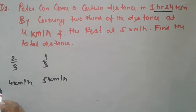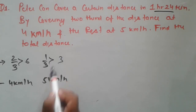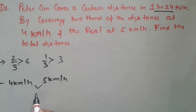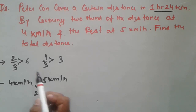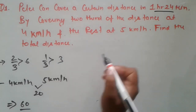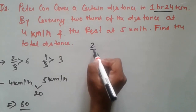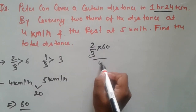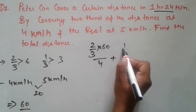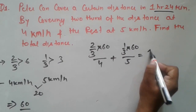We are given the speeds and the ratio of distances. We will take the LCM. LCM of 2 and 3 is 6; LCM of 1 and 3 is 3; LCM of 4 and 5 is 20. So the LCM of 6, 3, and 20 is 60. We assume 60 as the total distance. Total time is 1 hour 24 minutes. Two-thirds of 60 is 40, covered at speed 4; and one-third of 60 is 20, covered at speed 5.